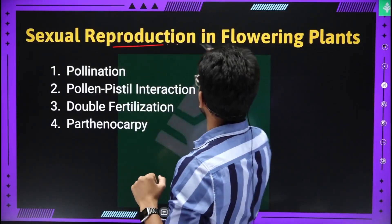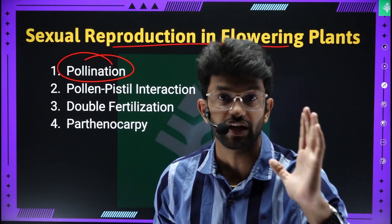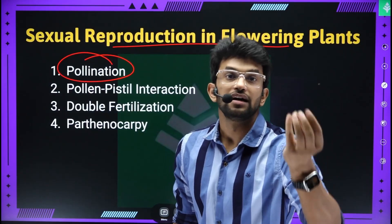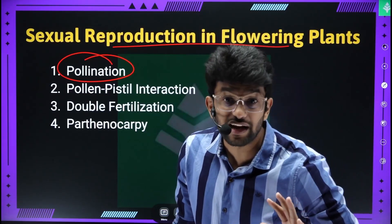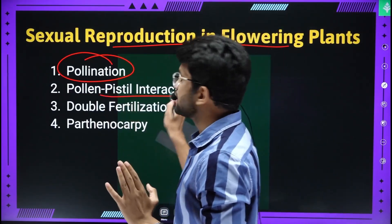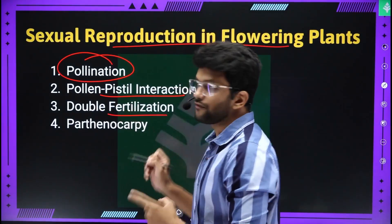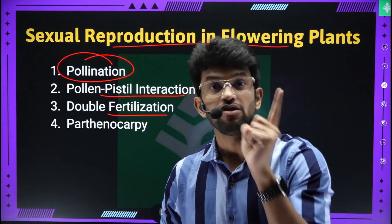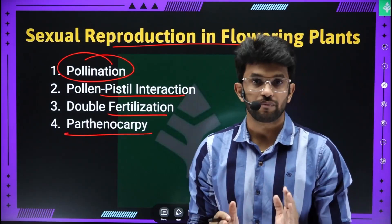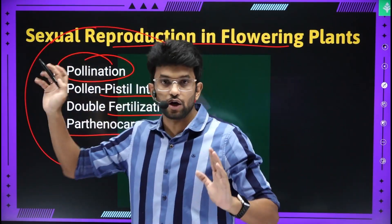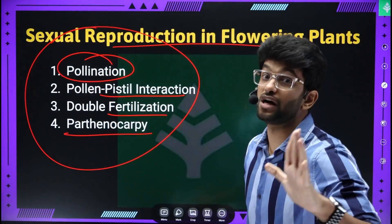In the first chapter — Sexual Reproduction in Flowering Plants — if you have a pollination topic, you will definitely get a question. Topics include: autogamy, geitonogamy, xenogamy; characteristics of wind-pollinated and water-pollinated flowers; outbreeding devices; pollen-pistil interaction; pollen grain and stigma diagrams; double fertilization; zygote; endosperm; and parthenocarpy. Please study these 4 key topic areas.